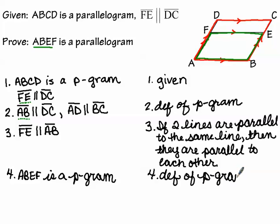That completes the first proof. There are other ways this proof could have been accomplished — this is just one of the shorter, more direct approaches, based on that second given being a heads-up to say we're doing something with parallel lines. Now let's look at our second proof.